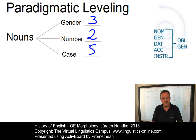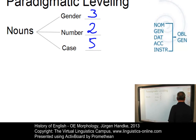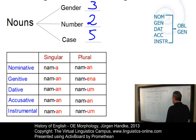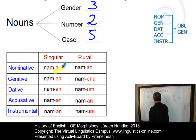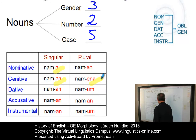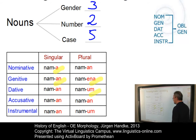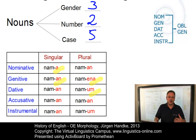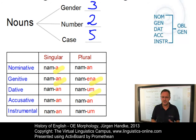This would mean that theoretically nouns of a particular gender could have 10 distinct endings. Let's check whether this is really the case. Here is the noun which represents present-day English 'name.' As you can see, we have the following distinct forms: the nominative singular 'nama,' then the genitive singular; the rest is identical — 'namena,' the genitive plural, and 'namum,' the dative plural. So out of the 10 possibilities, only four are used in this particular paradigm. The loss of a number of distinctions during Old English had already considerably reduced the entire system.